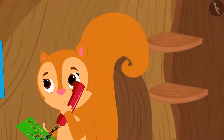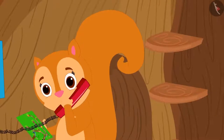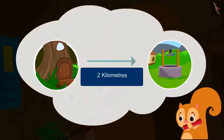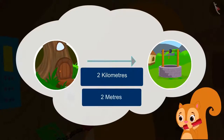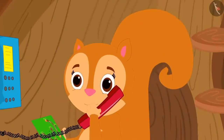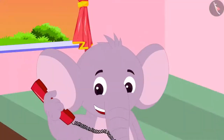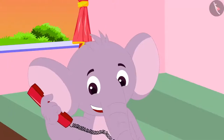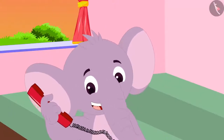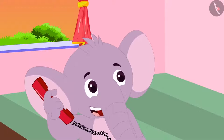Chanda thought that she heard Appu wrong. She told Appu, I think you mistakenly said two kilometers in place of two meters. I know all about meters. On hearing this, Appu laughed and said, Chanda, I did say two kilometers.